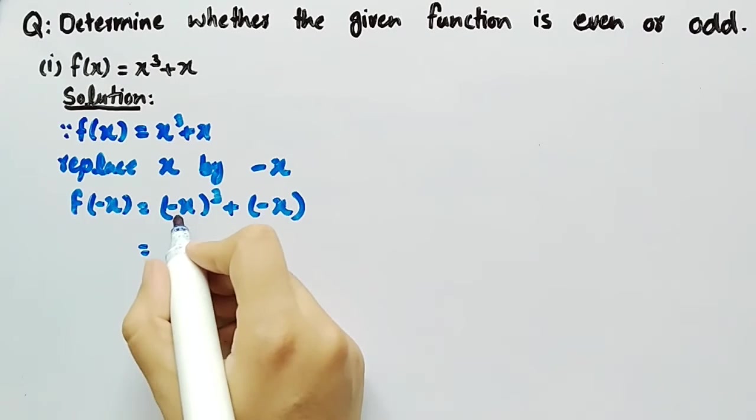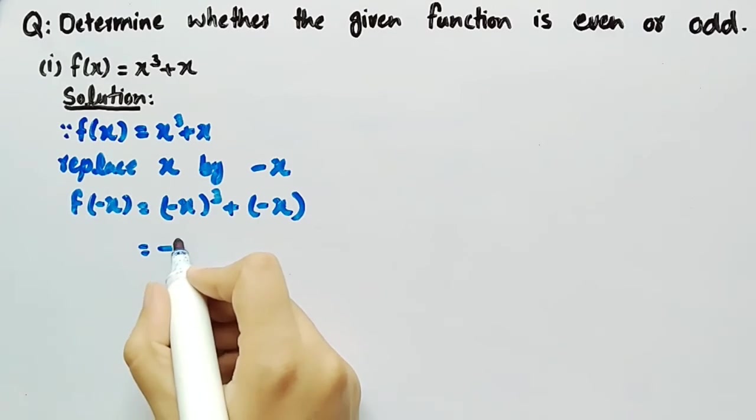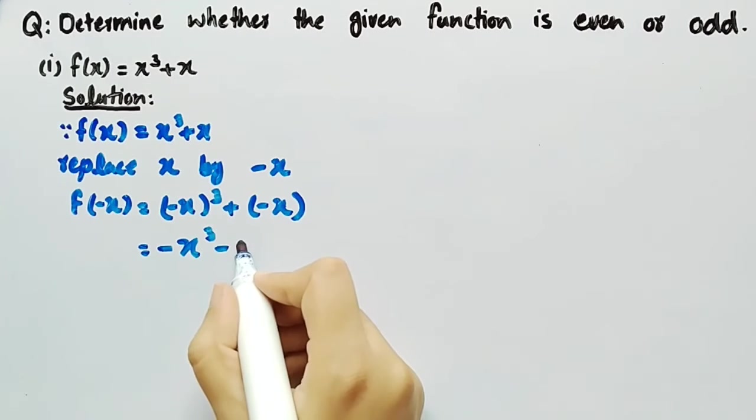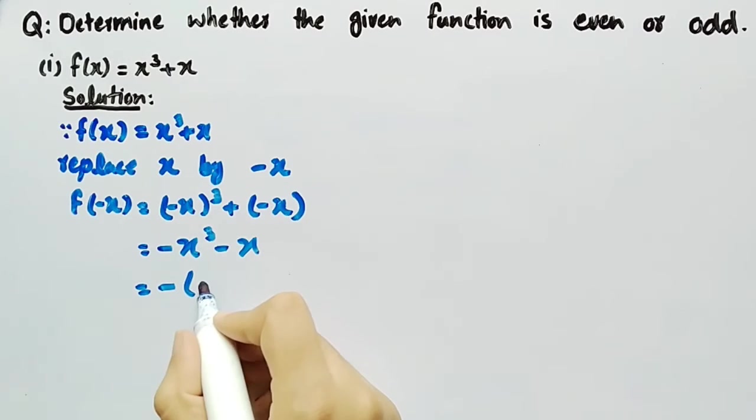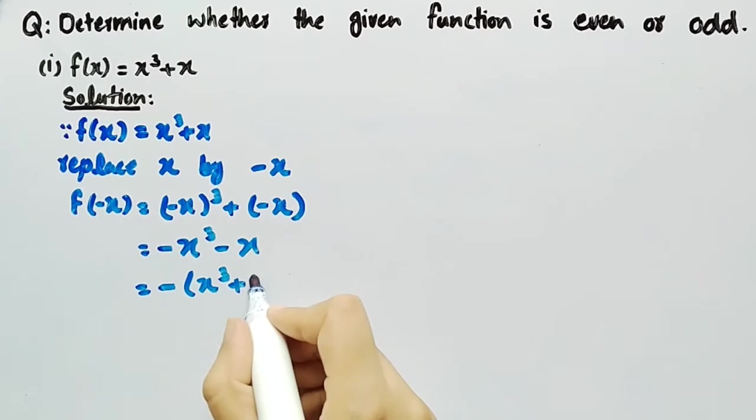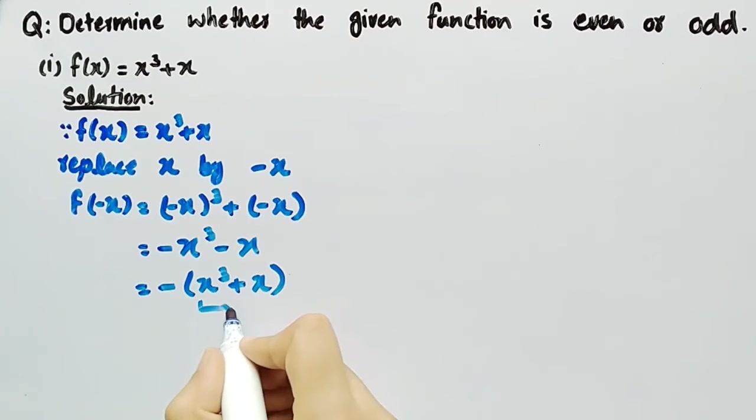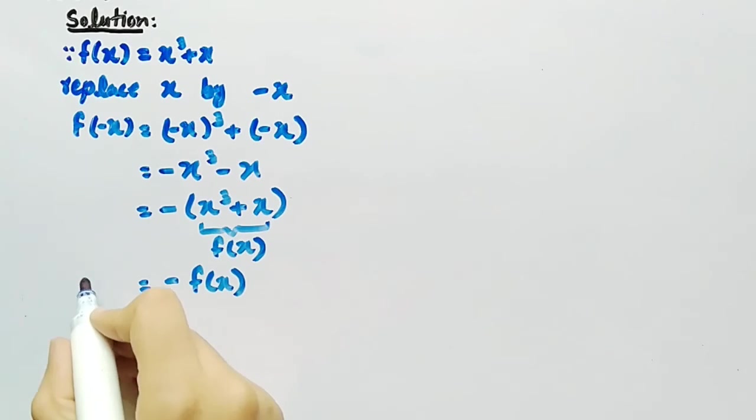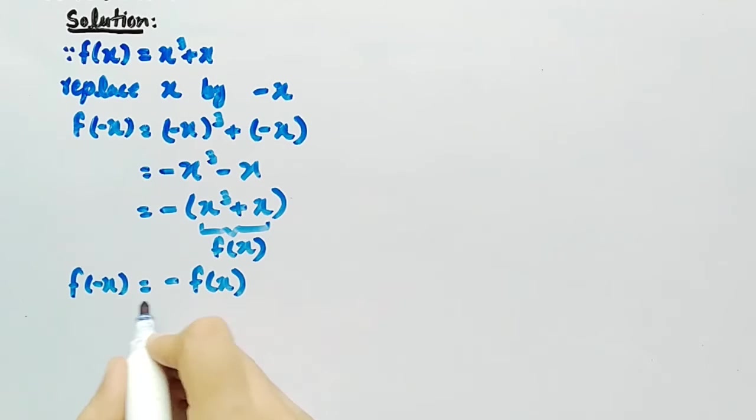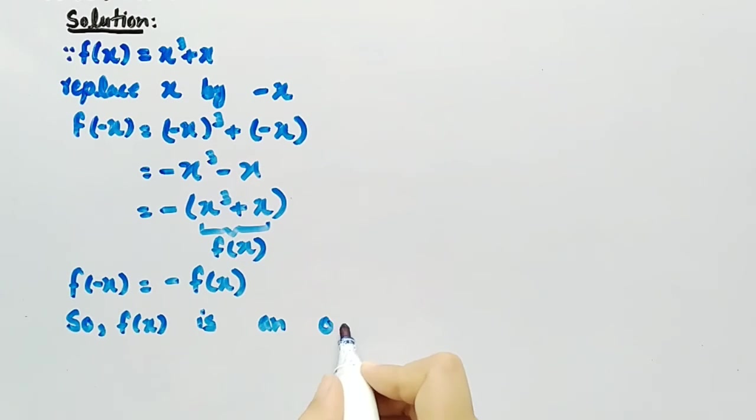We know that (-x)³ = -x³. So this equals -x³ - x. If we take the minus sign common, we get -(x³ + x). We can clearly see that this equals -f(x). Since f(-x) = -f(x), f(x) is an odd function.